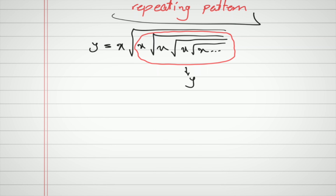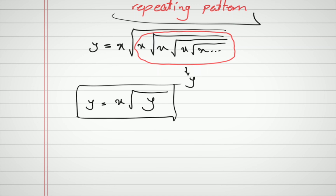So y is equal to x times square root of y, and yeah, we've almost solved it. We've transformed that weird equation into this simple, solvable equation — and that's why we're happy.